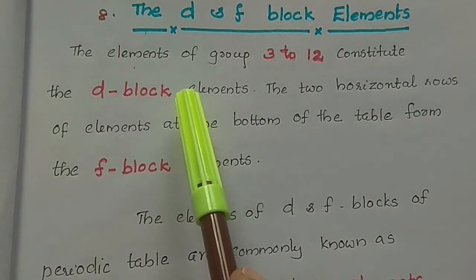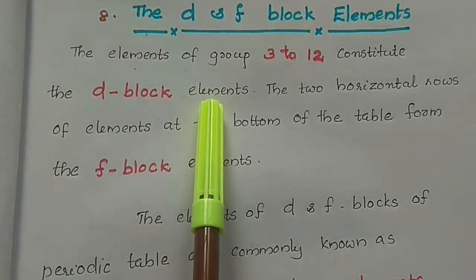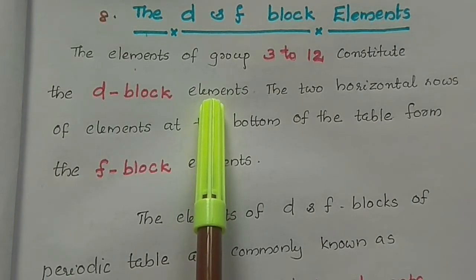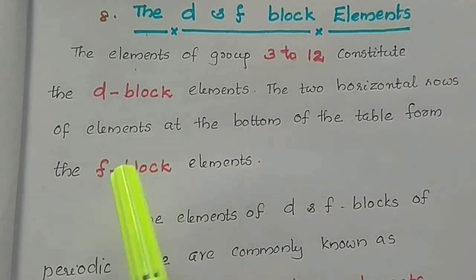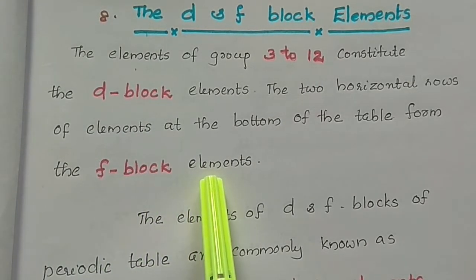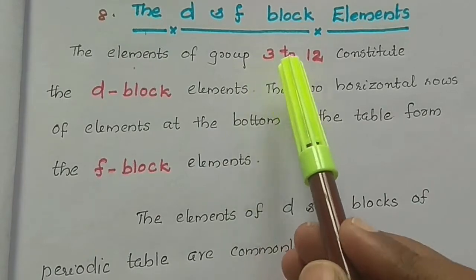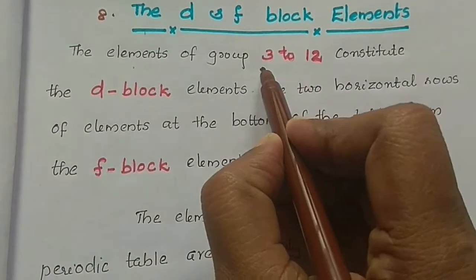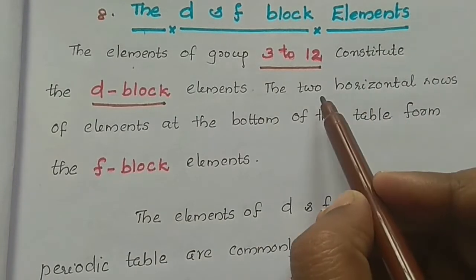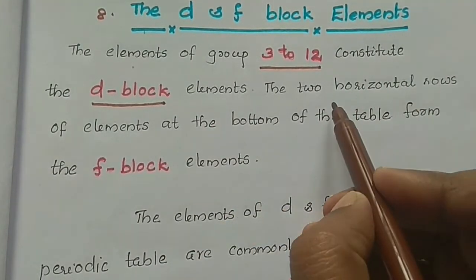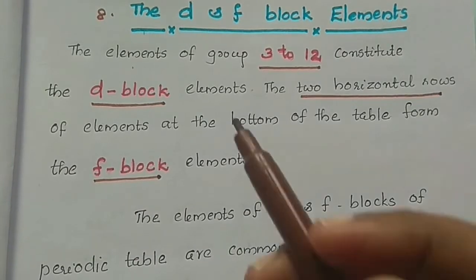In the periodic table, the elements in groups 3 to 12 are called D block elements. The periodic table has 18 groups total, and groups 3 to 12 contain the D block elements.